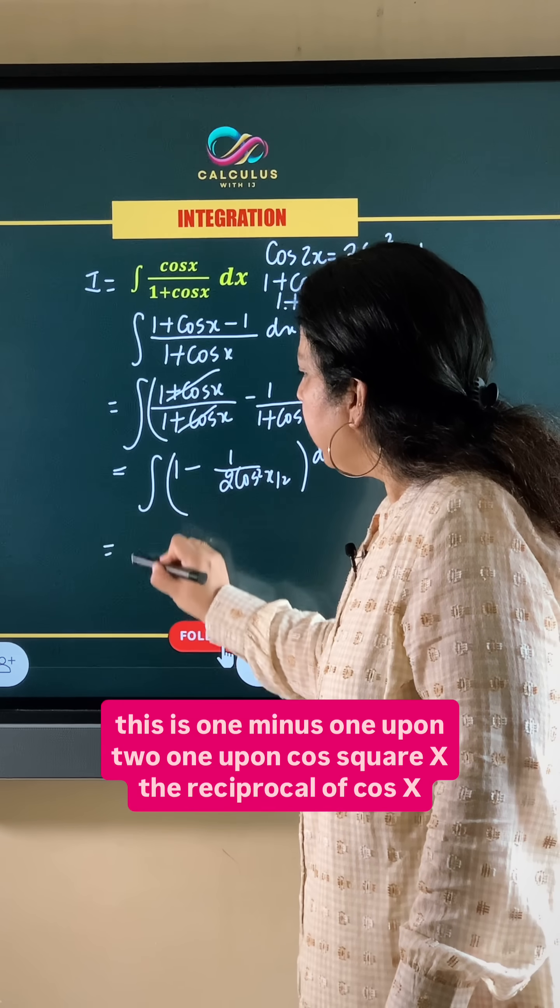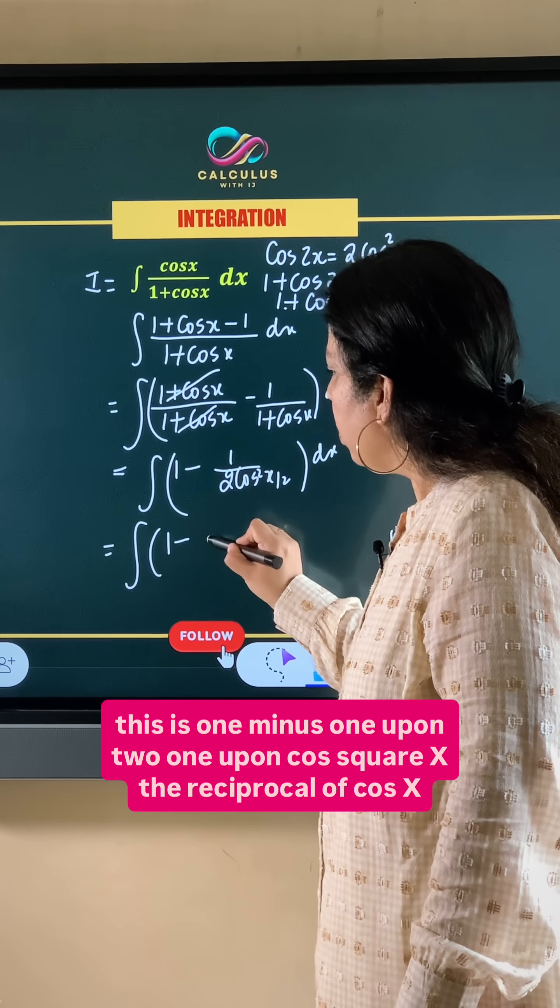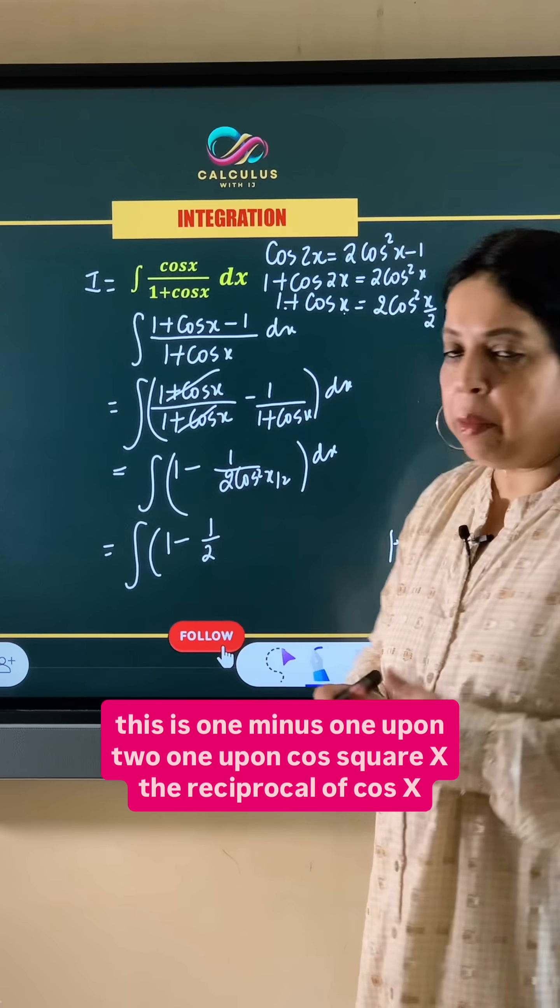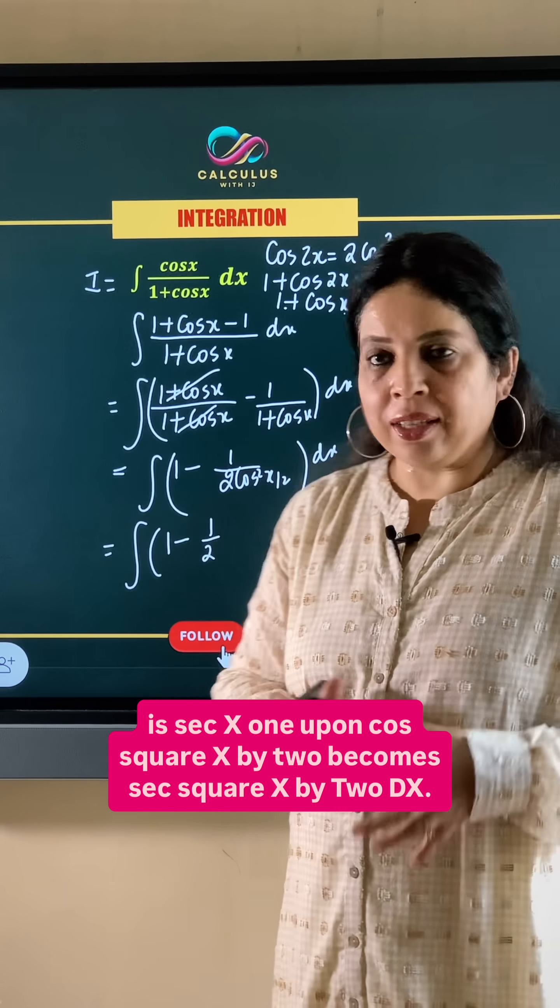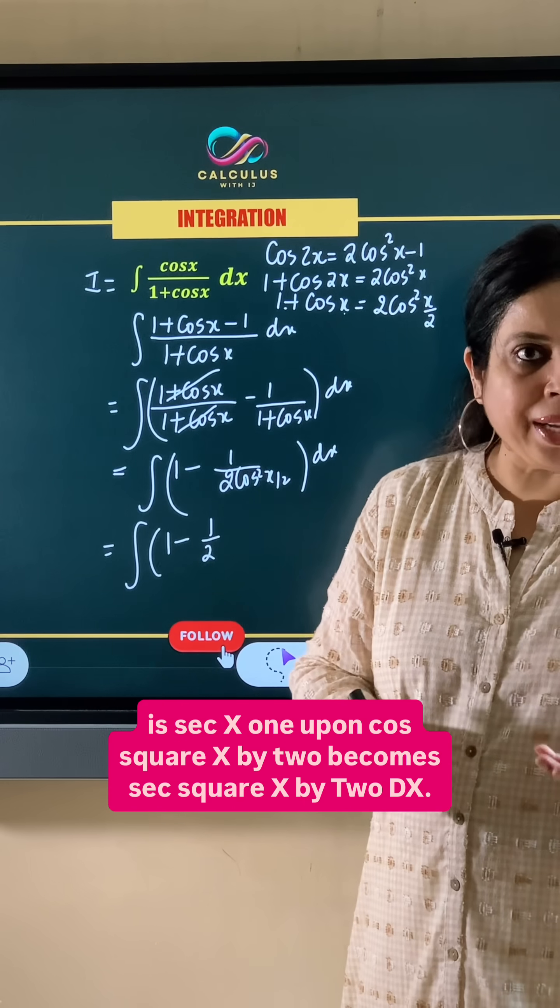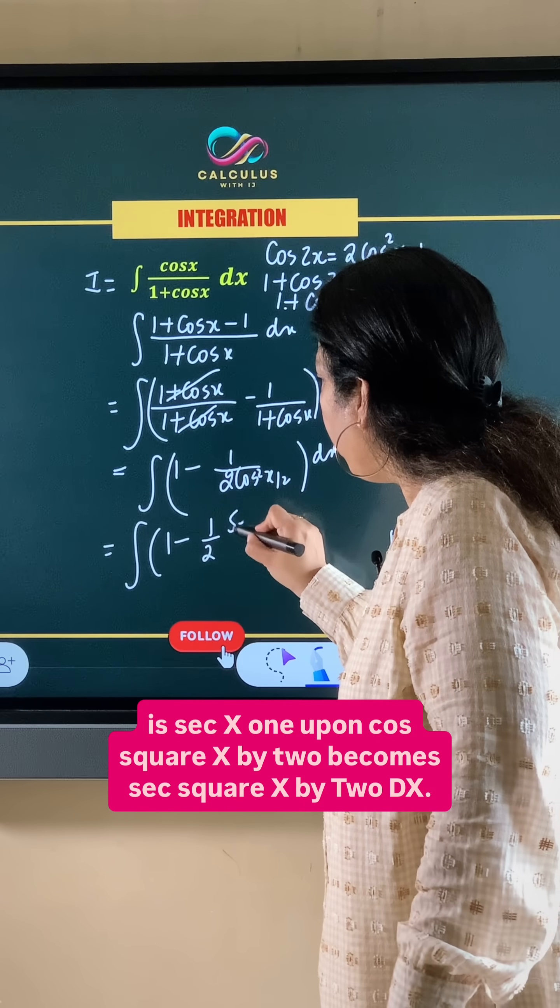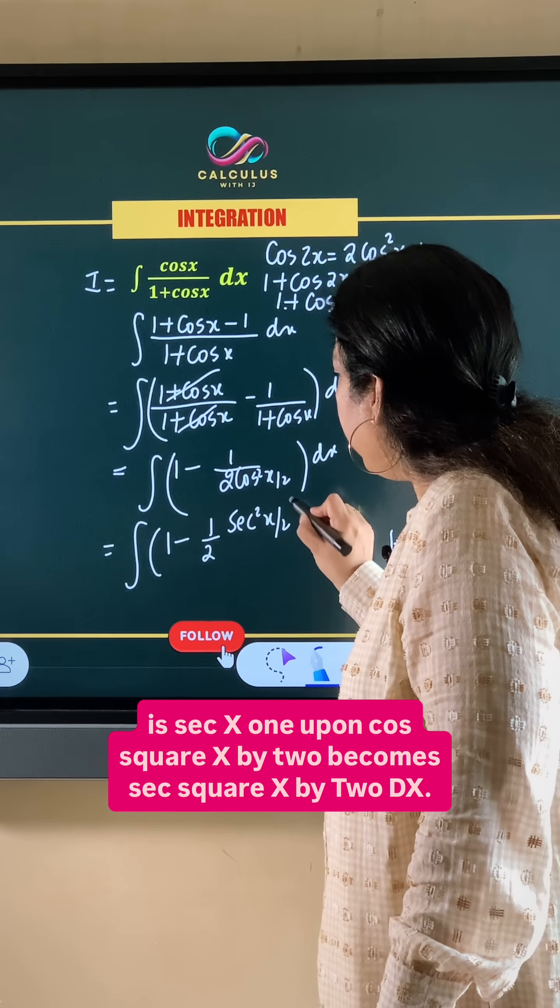Now this is 1 minus 1 upon cos square x. The reciprocal of cos x is sec x. So 1 upon cos square x by 2 becomes sec square x by 2 dx.